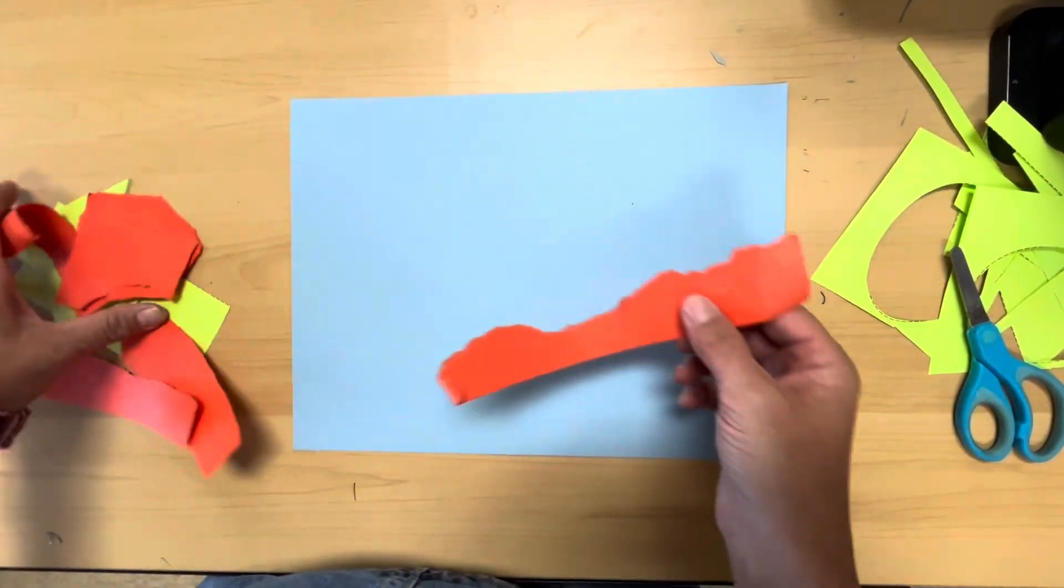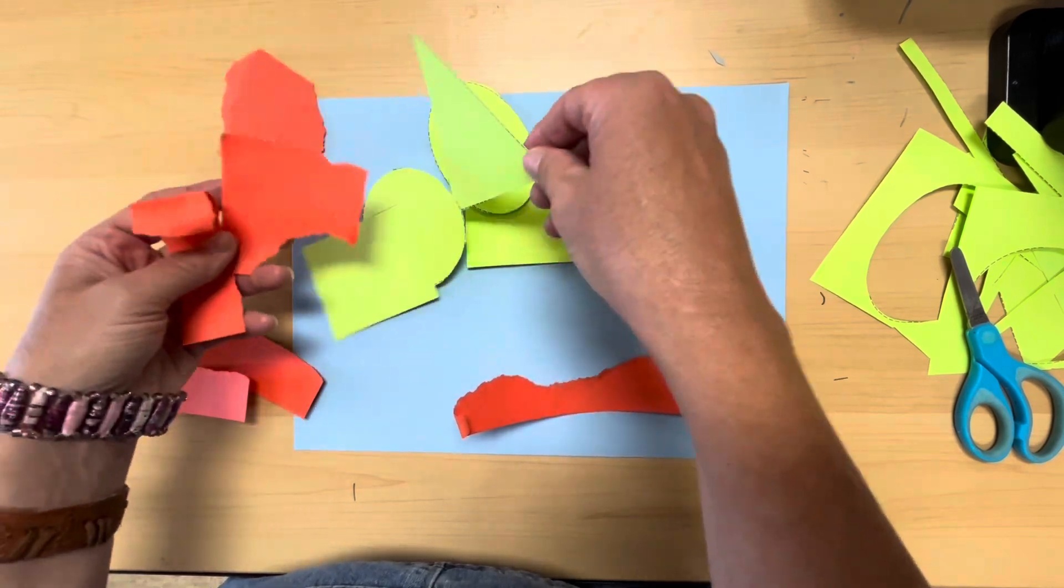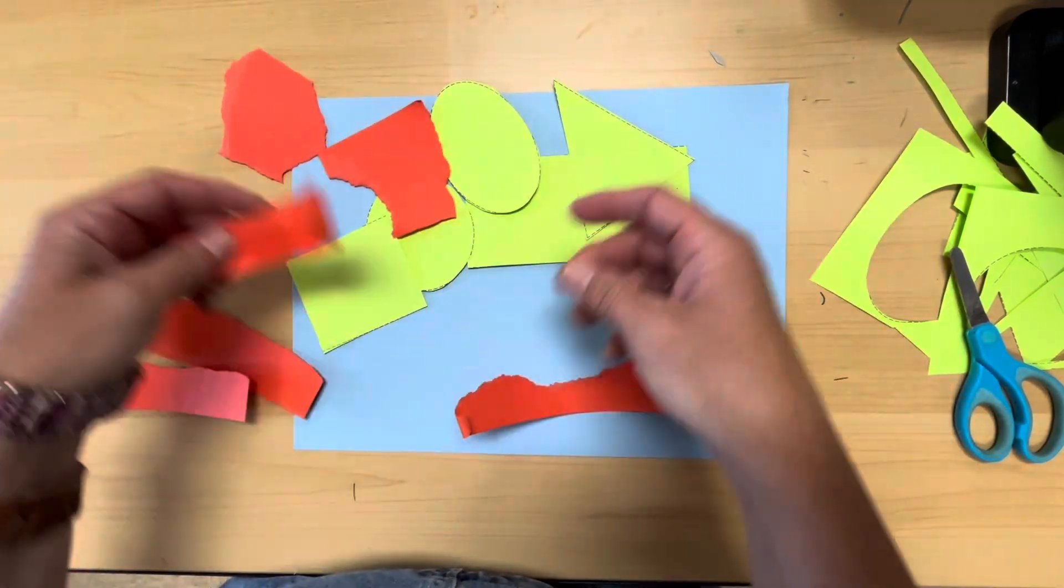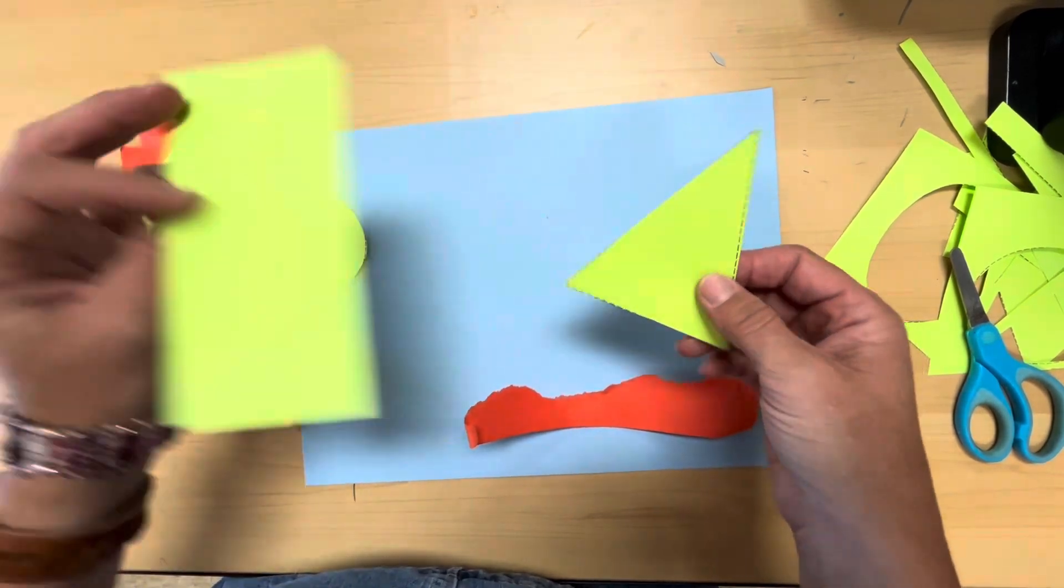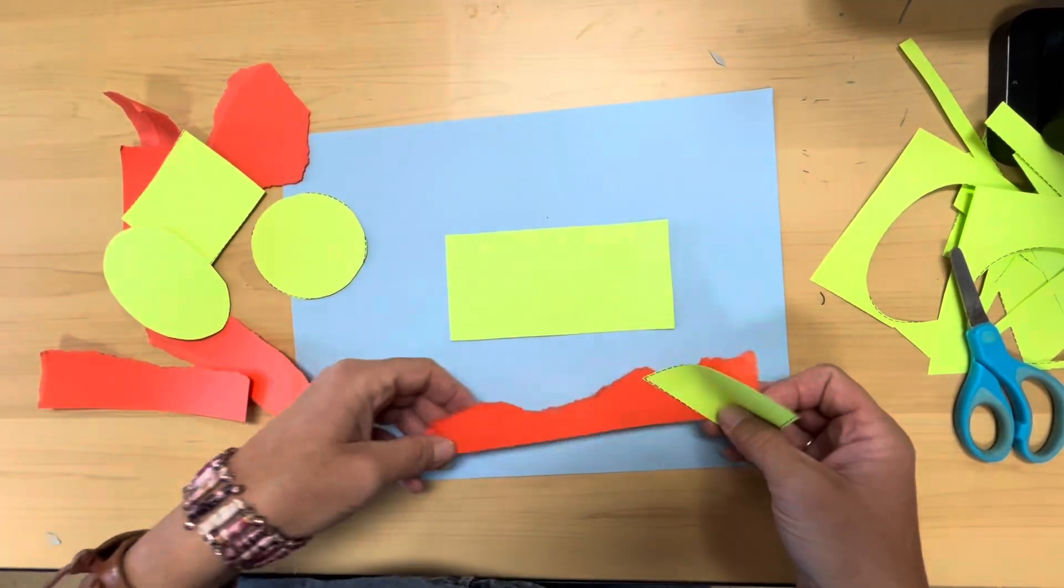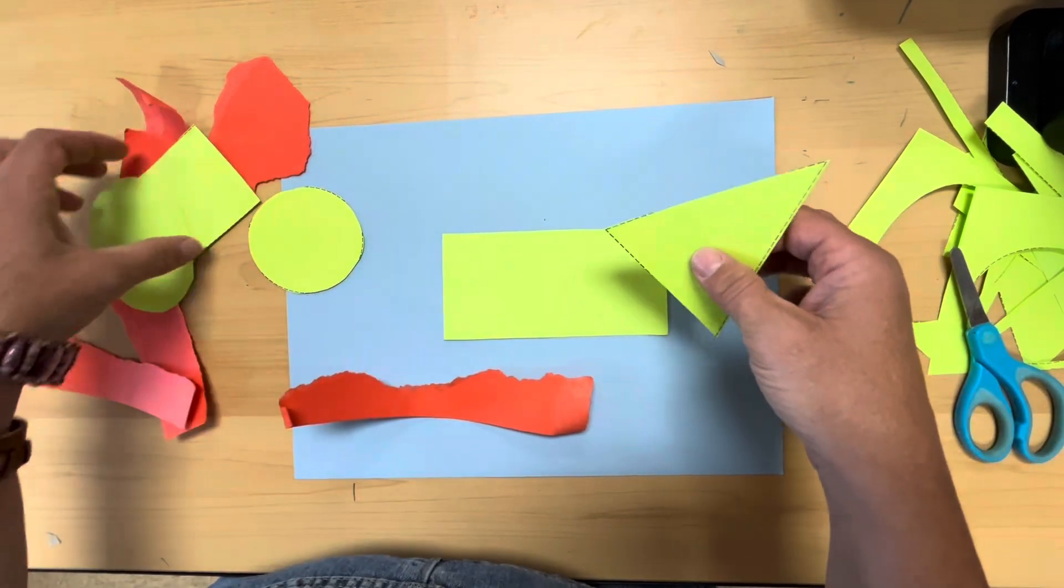Now I have torn paper shapes and I have my cut paper shapes. I'm going to arrange them or place them on my paper in different ways to make a piece of art. I'm going to try a few different things before I decide to glue them down.